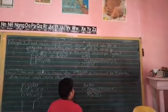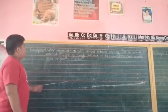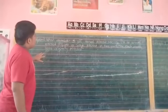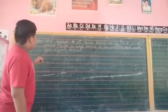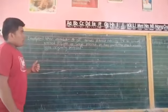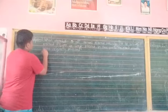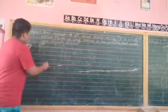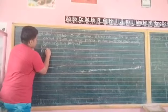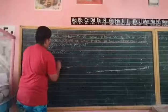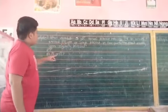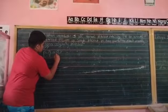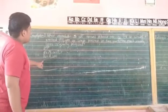Let's move to example number 3. When invested at an annual interest rate of 7%, an amount earned 11,200 pesos of simple interest in 2 years. How much money was originally invested? So in this question, we have to find the principal. The given are: 7% or 0.07 is our rate, 11,200 which is our simple interest, and 2 years which is our time.